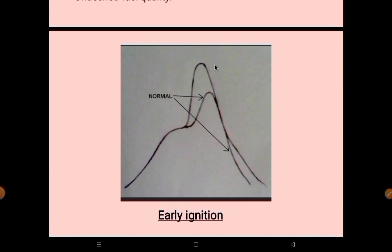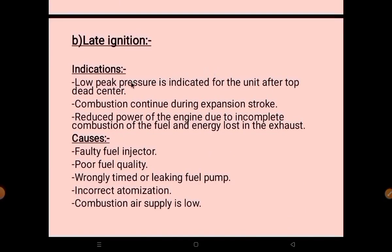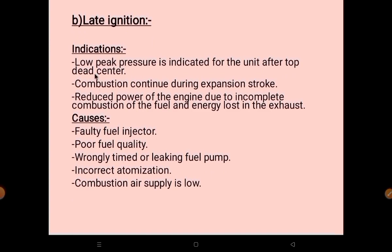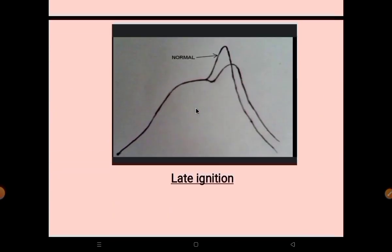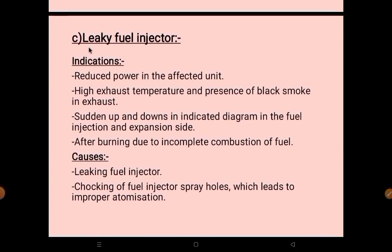The second irregularity is late ignition. Indications are: low peak pressure indicated for the unit after top dead center; combustion continues during the expansion stroke since ignition is late; and reduced engine power due to incomplete combustion with energy lost in the exhaust. Causes include faulty fuel injector, poor fuel quality, wrongly timed or leaking fuel pump, incorrect atomization, and low combustion air supply.